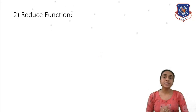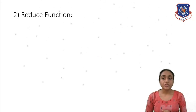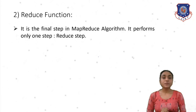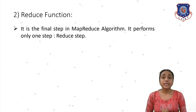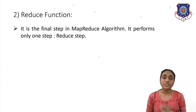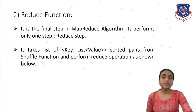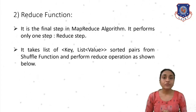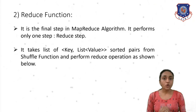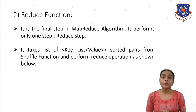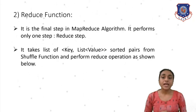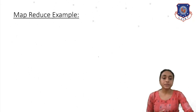The third step is the reduce function, which is the final step of the MapReduce algorithm. It performs one step: reduce. It takes the list of keys and values already sorted in pairs from the shuffle function and performs the reduce operation.